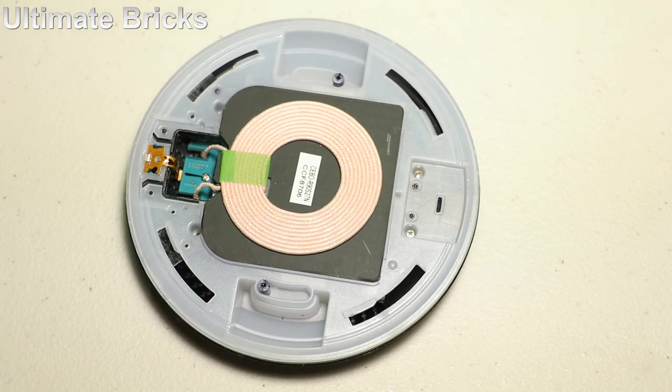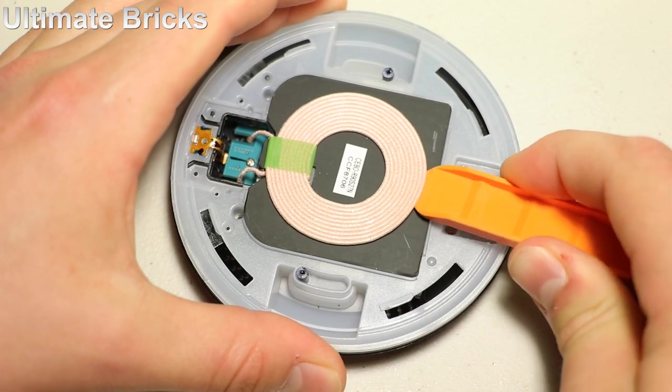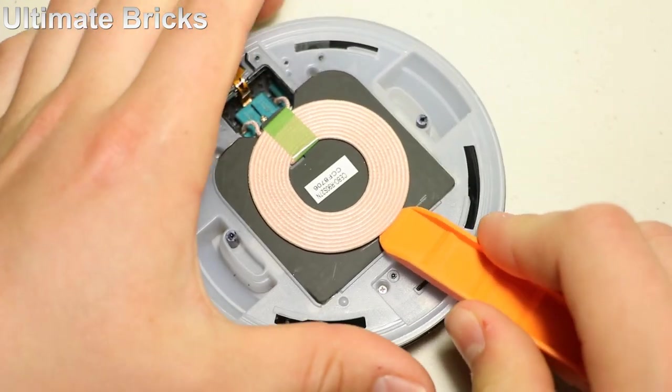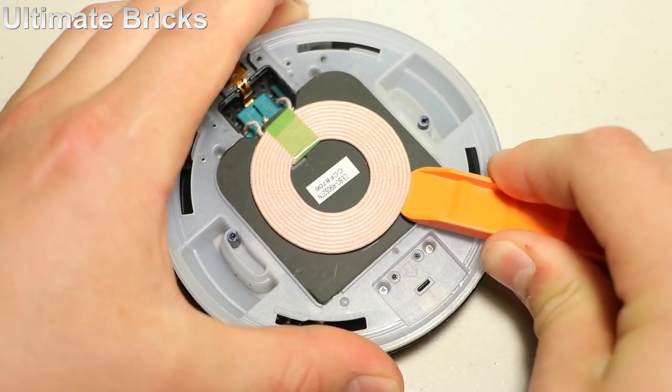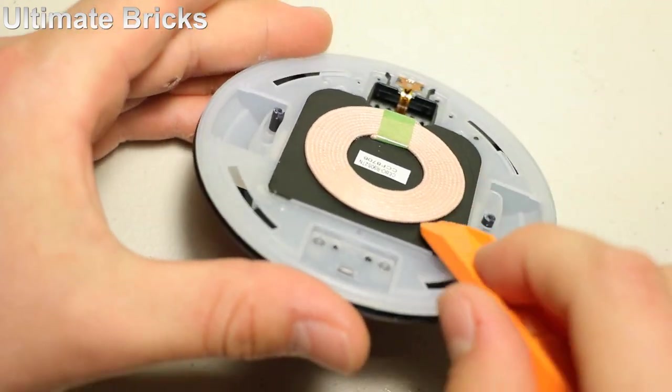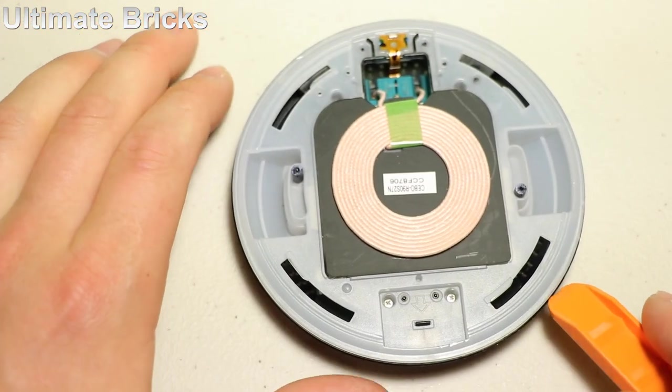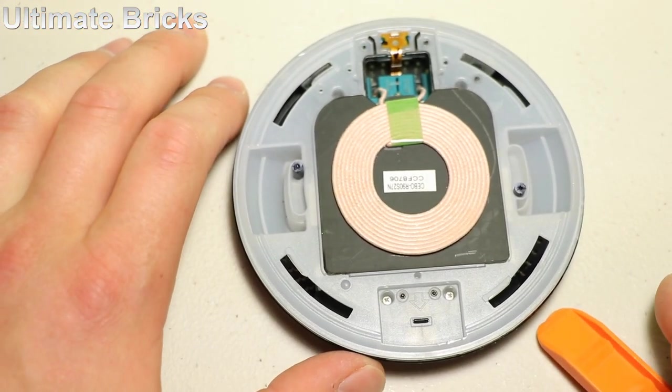The next step will be to remove the actual electronics that are on the outside. So starting with the wireless charging coils, I'm going to try to use a brick separator to get all the way around the sides because it is glued on there pretty good. But I'm going to try to lift it up without damaging it. That will be the tricky part.